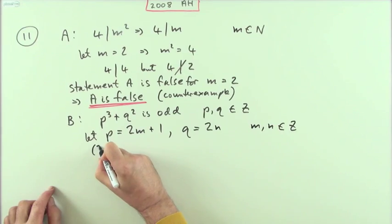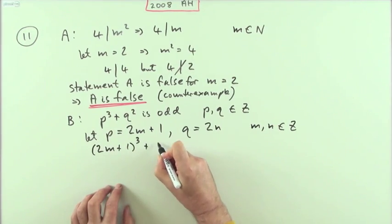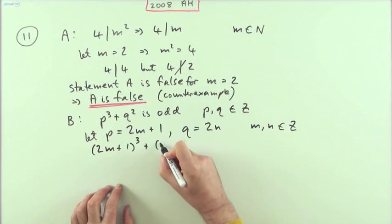If that's the case, then what does this expression become? So if I've got p cubed, I've got (2m + 1)³, that's a little bit nasty. And if I've got q squared, I've got (2n)², that's a little bit easy. For that one, I'll just have to go through the binomial expansion.